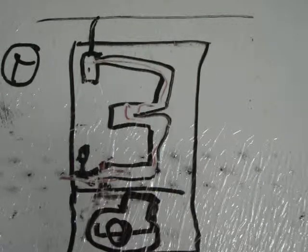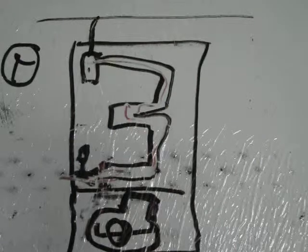A condensing furnace will have a PVC or a plastic flue pipe coming out. A non-condensing furnace will have a metal pipe coming out of it for the flue gas. So that's your two different types.